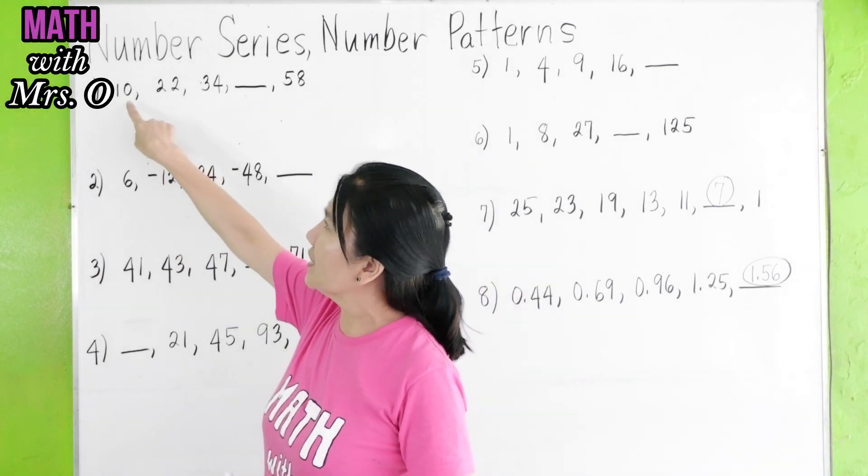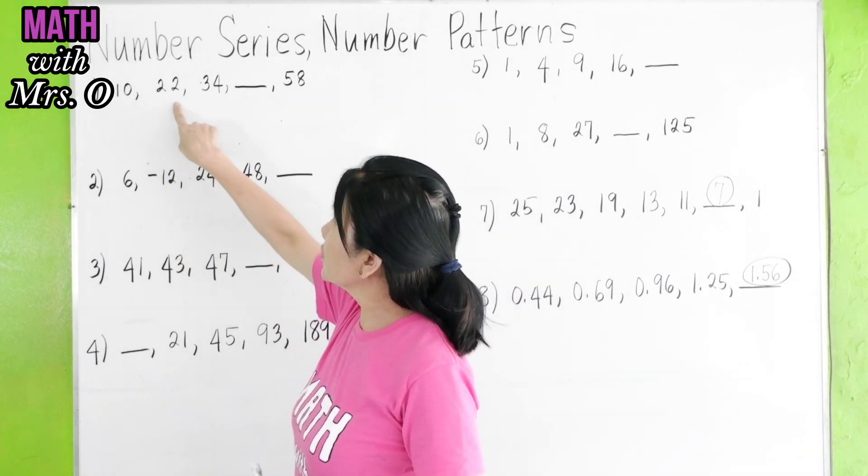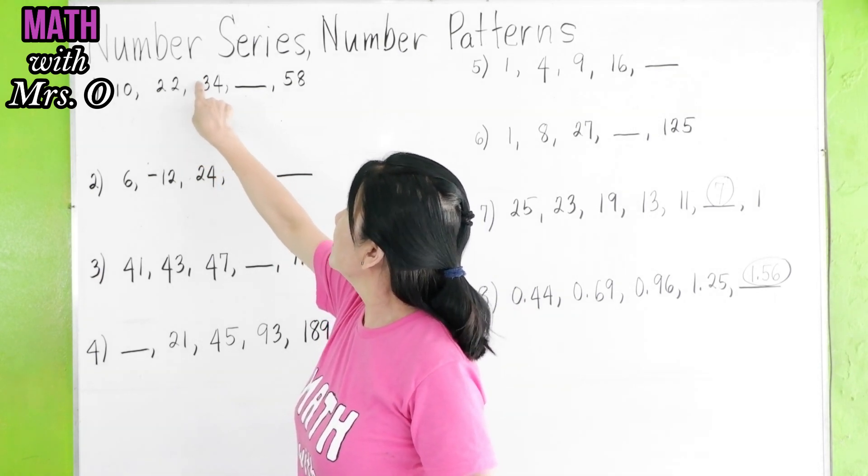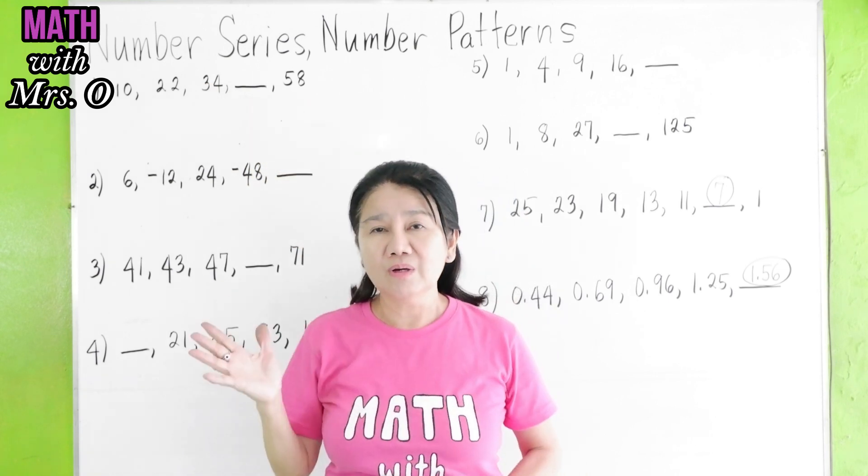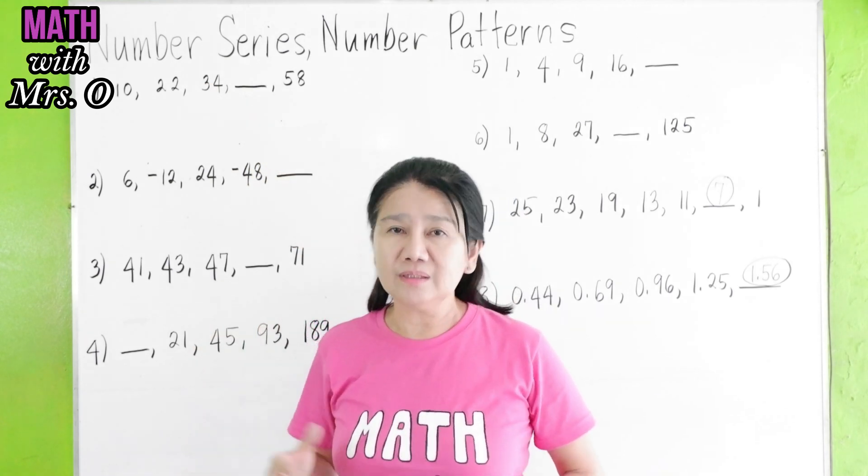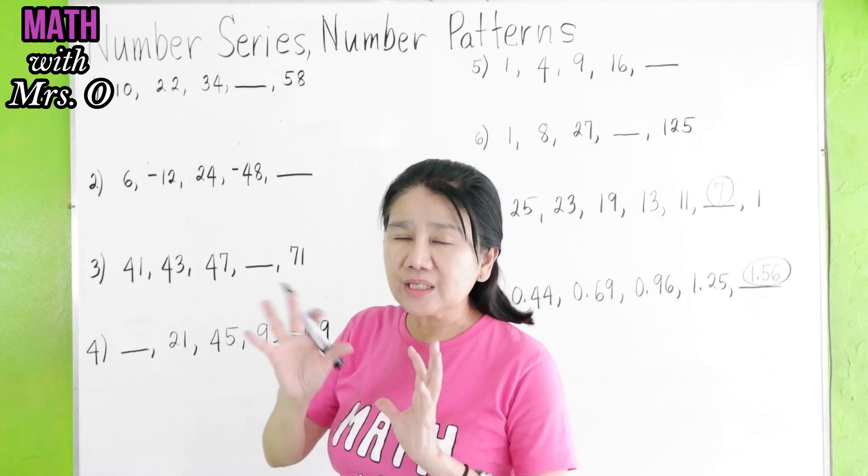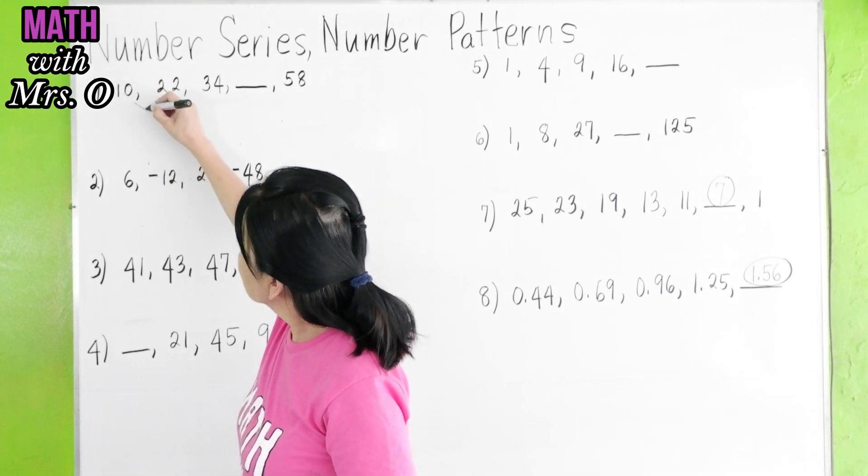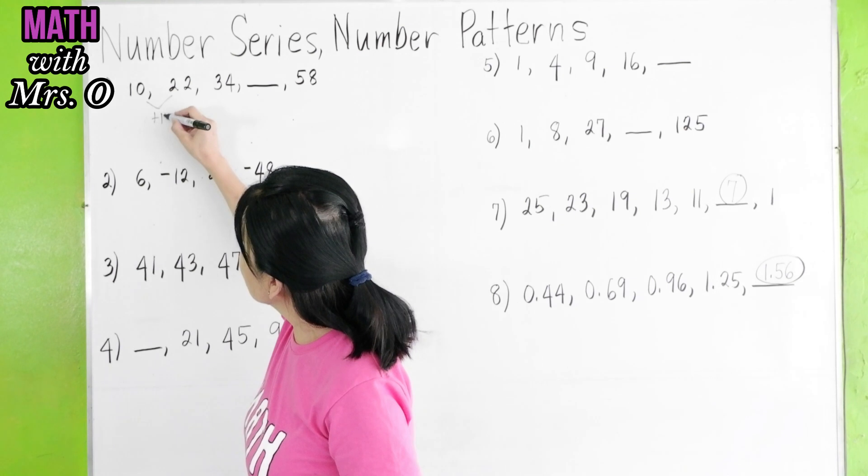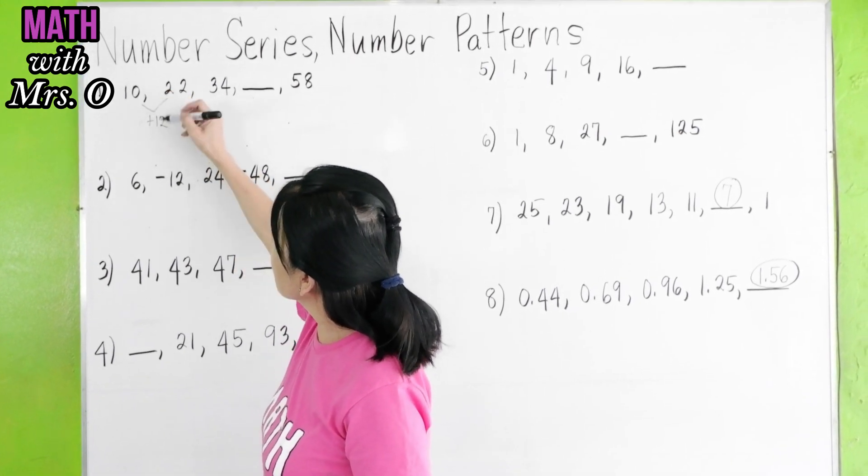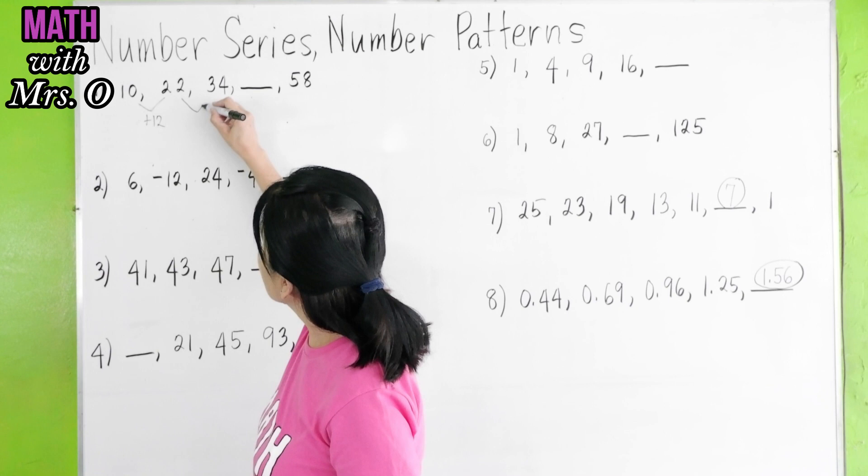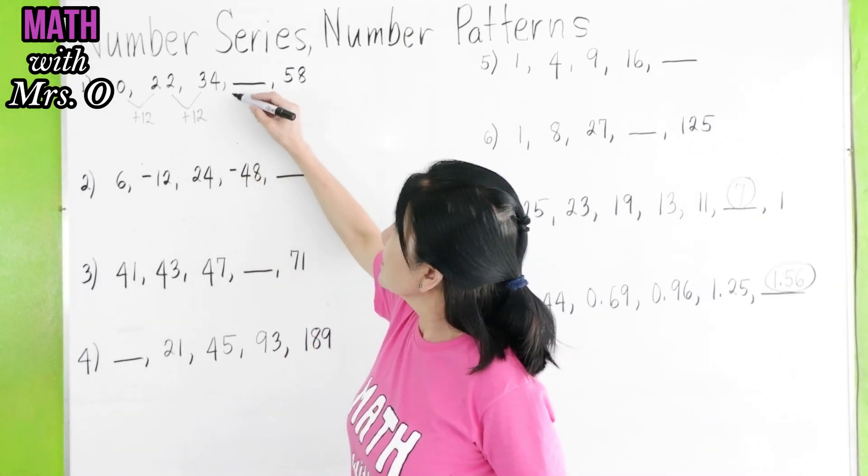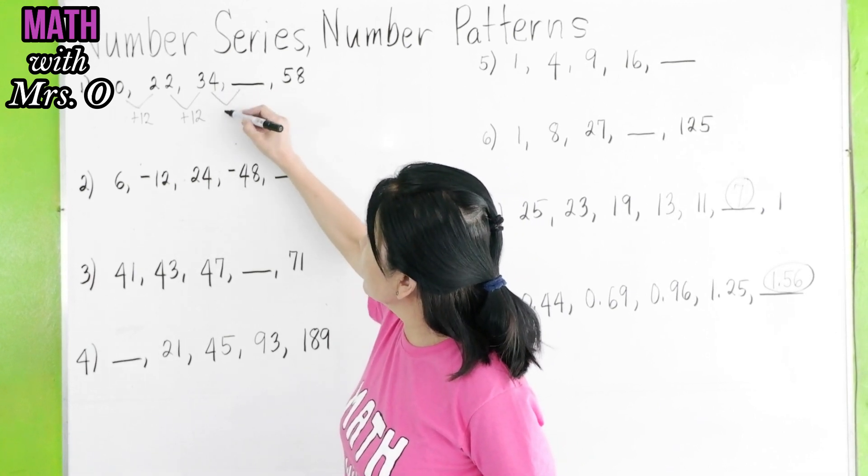Problem number one. We have here 10, 22, 34, blank, and 58. Now, how do you get the number? You have to take a look at the differences. Like 10 and 22, the difference is positive 12. 10 plus 12 will give you 22. 22 and 34 also gives you a 12.